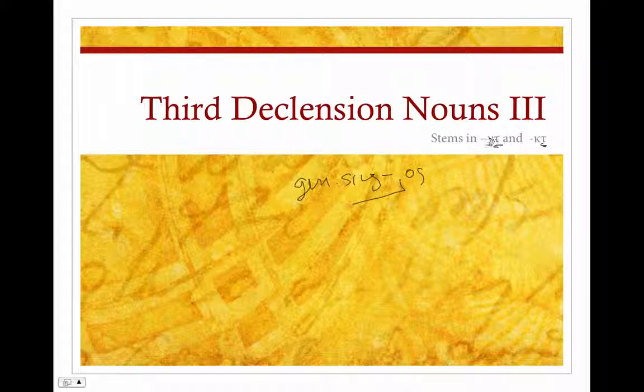It will either be a nu tau or a kappa tau. We're going to take a look first at the nouns that end in kappa tau, and we'll find that these are really pretty normal, and you'll be able to decline them easily.